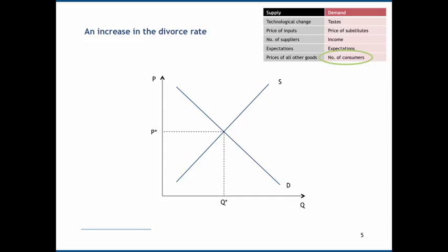Step two is to decide whether it's going to cause an increase or a decrease. An increase in the divorce rate is going to increase the number of consumers, and therefore the demand curve is going to shift upwards or outwards and interact with the supply curve at a higher price and also at a higher quantity. This should fit with intuition that if the demand for a good rises, prices are going to rise and so too will output.